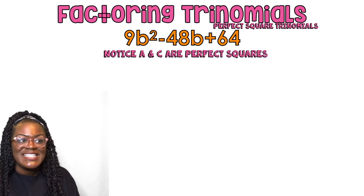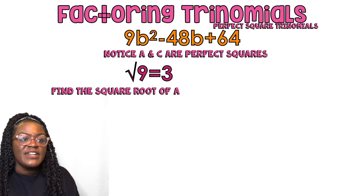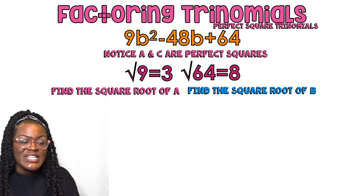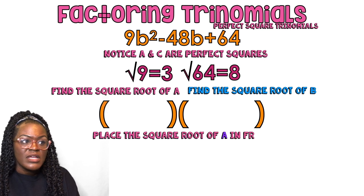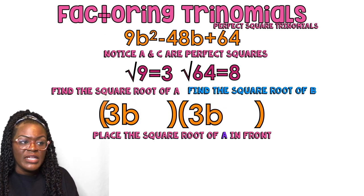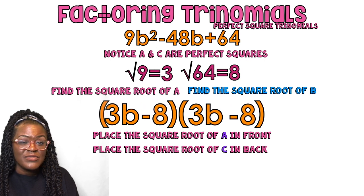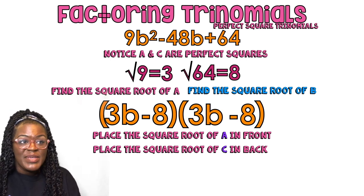Notice a and c are perfect squares: nine is a perfect square, 64 is a perfect square. The square root of nine is three, the square root of 64 is eight. Eight times three is 24, 24 times two is 48. All I have to do is take the square roots — three in the front because nine was in the front, and eight in the back because 64 was at the end.